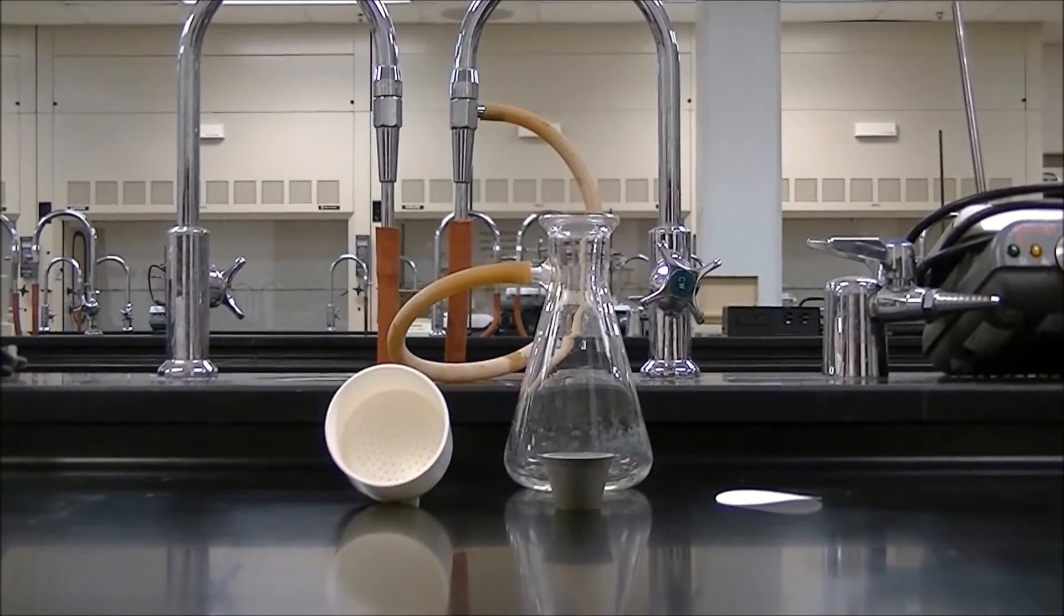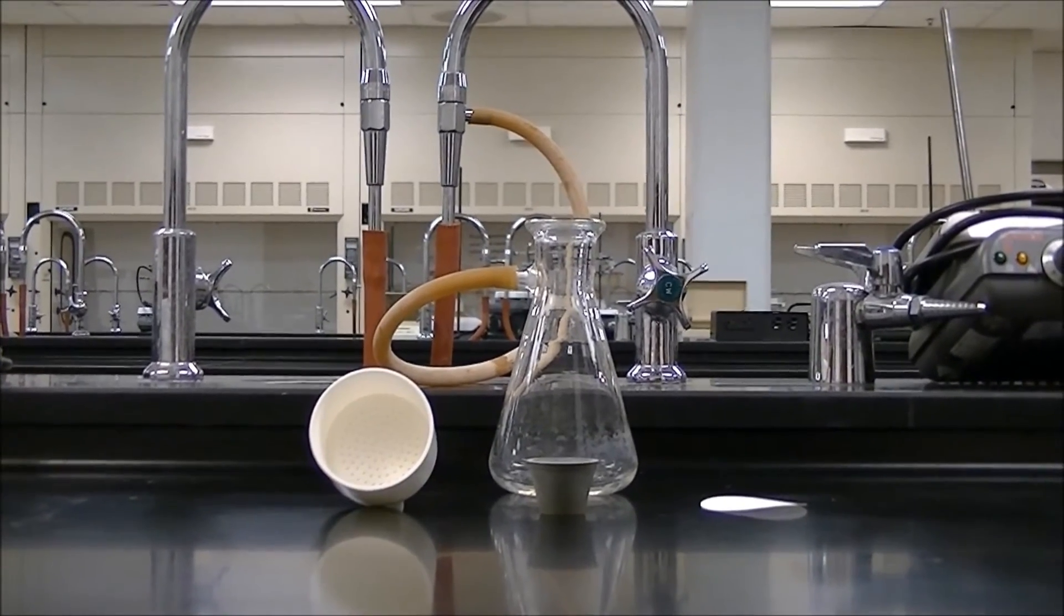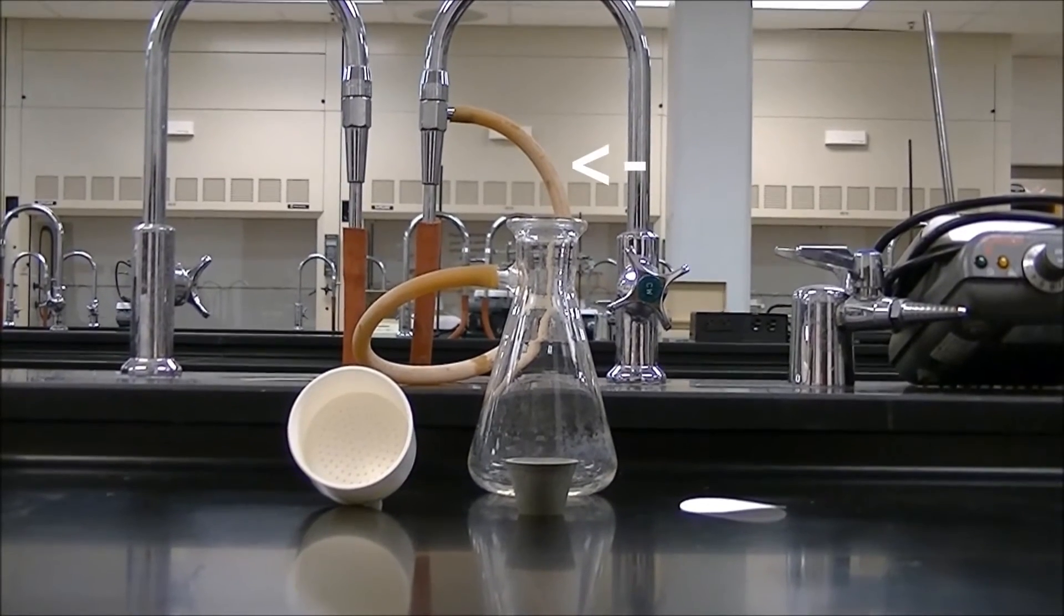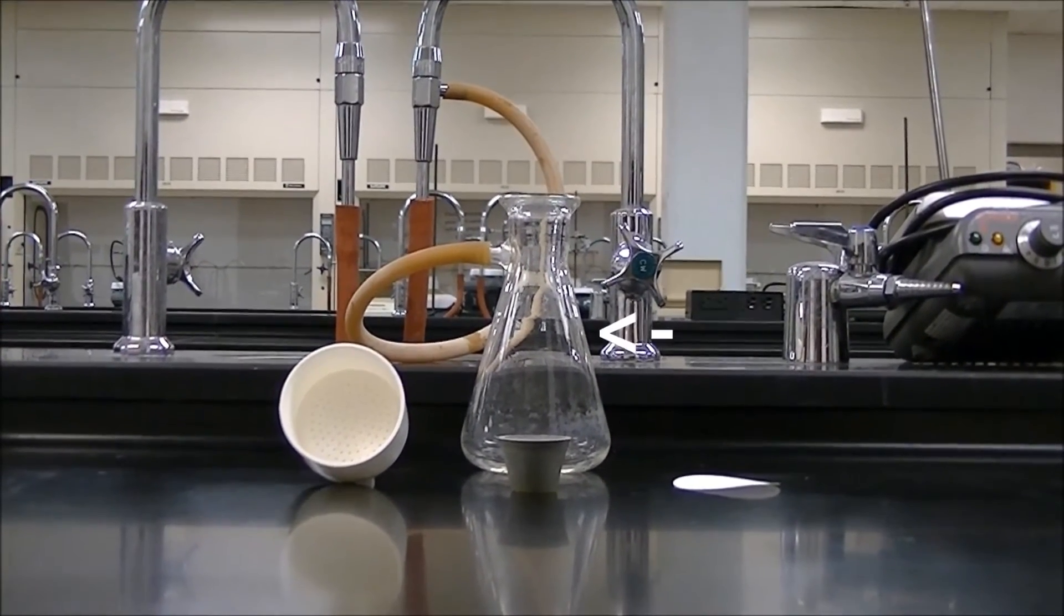Now we're going to set up a filtration apparatus to catch our ethyl-4-aminobenzoate solid. You'll need a Buchner funnel, a rubber adapter, a hose that will attach to the faucet, a piece of filter paper, and a filter flask.